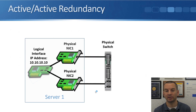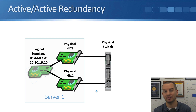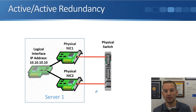With active-active redundancy it looks the same from the outside world. We've got those two physical NICs with that one IP address, 10.10.10.10, on the logical interface. With active-active, the server can send out both ports at the same time, so we get double the bandwidth and the load balancing. If any one port fails, all the traffic will just go out the remaining port.